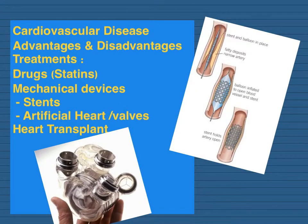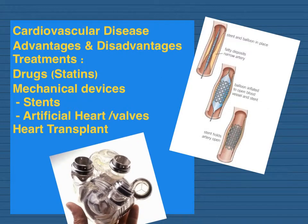The next sections cover non-communicable diseases, with a key focus on coronary heart disease and cardiovascular disease — particularly how they are treated. The examiners clearly specify that you need to know the advantages and disadvantages of treating cardiovascular disease by drugs such as statins, mechanical devices like stents, artificial hearts, valves, and heart transplants. You'll need to know how coronary heart disease occurs — fatty material builds up inside the coronary arteries, narrowing them, reducing blood flow, and causing a lack of oxygen for the heart muscle.